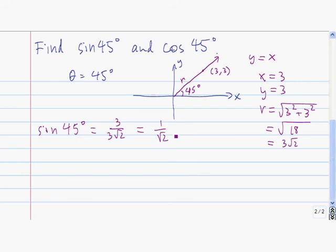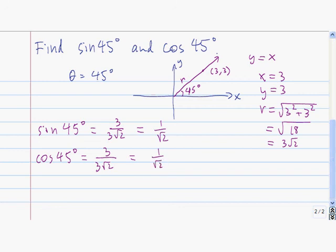We already knew that was the sine of 45 degrees. For cosine of 45 degrees, we take the x-coordinate of the point and divide it by r. Again, the 3's cancel and leave us with 1 divided by the square root of 2.